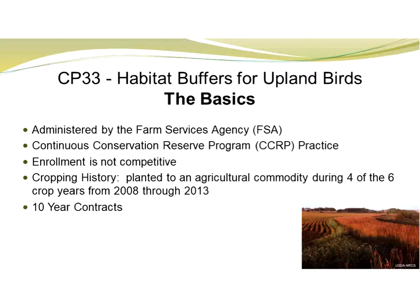It is a CRP program so it still follows regular CRP rules. To be eligible to apply for CP33, the portion of the crop field has to have cropping history — four out of the six years between 2008 and 2013, that crop field had to have been planted in some kind of ag commodity. These years typically change with a new farm bill. It is a ten-year contract, so it is a significant time commitment from producers.